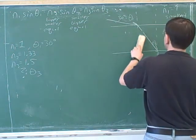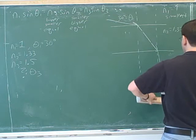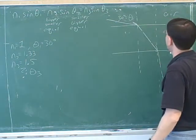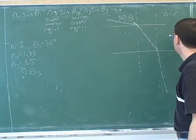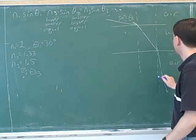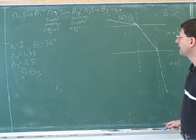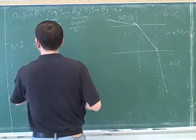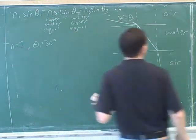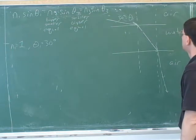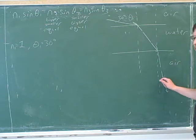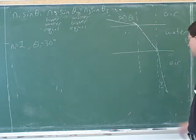So let's see. Let's say that we go from the air into the water and then back into the air. And let's say the initial angle is 30 degrees again. What would this angle be? What would this angle be? Theta 3.